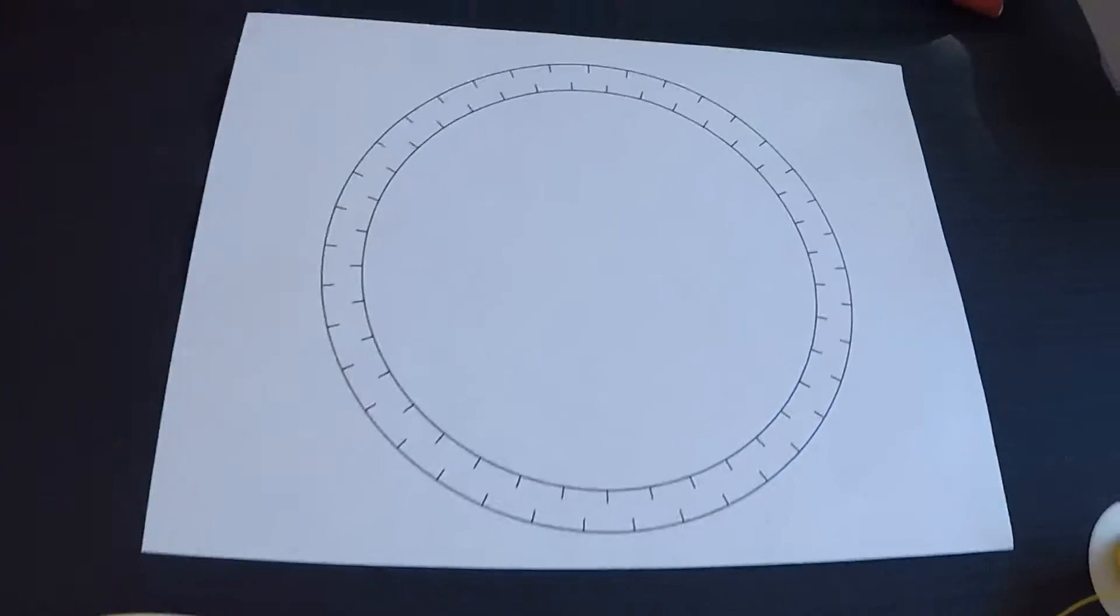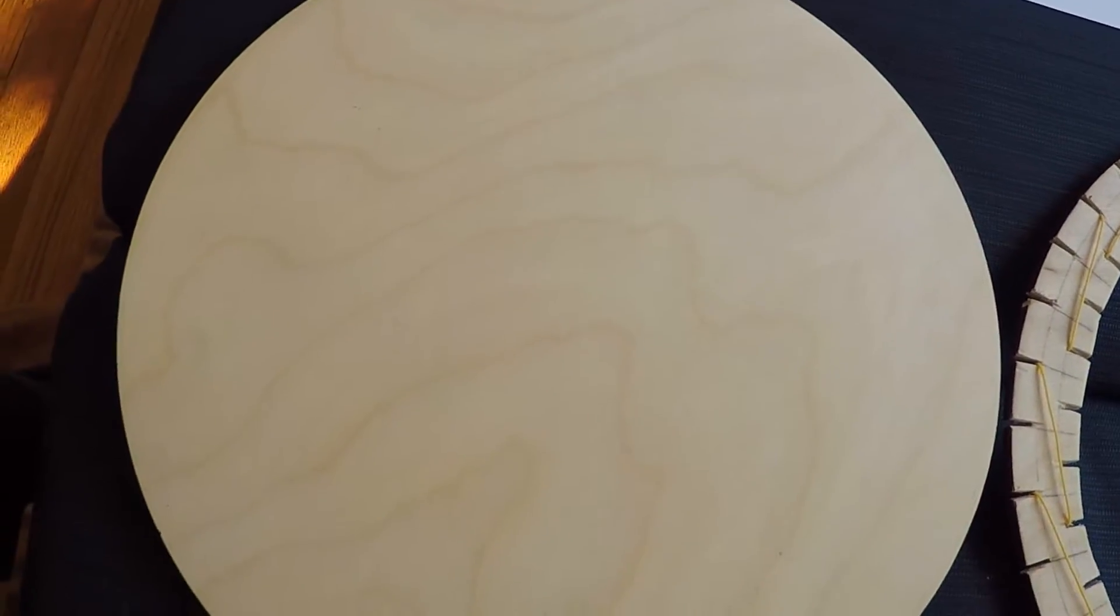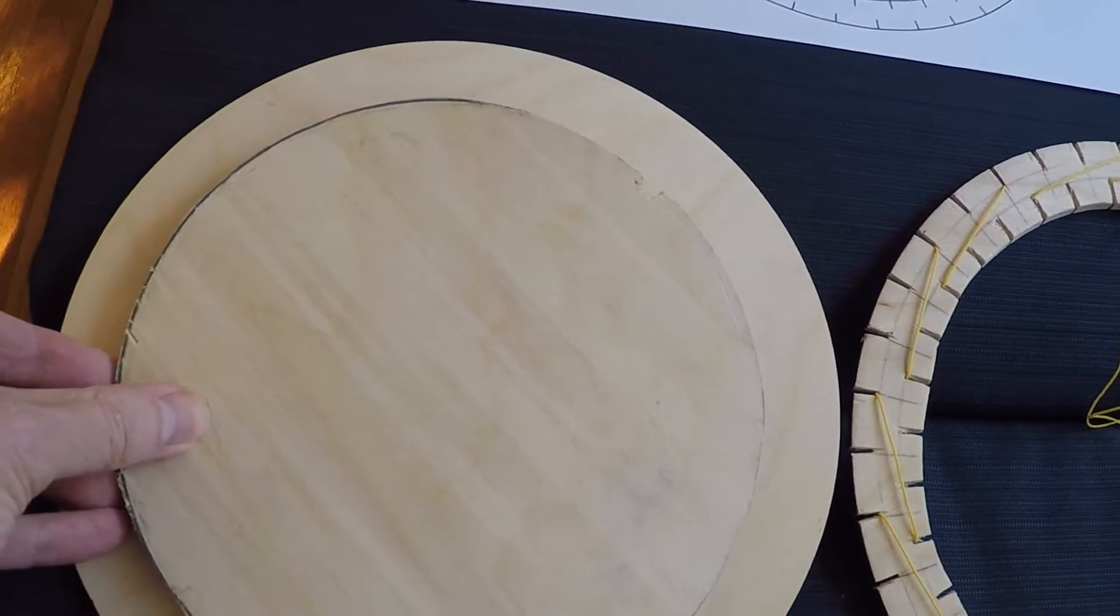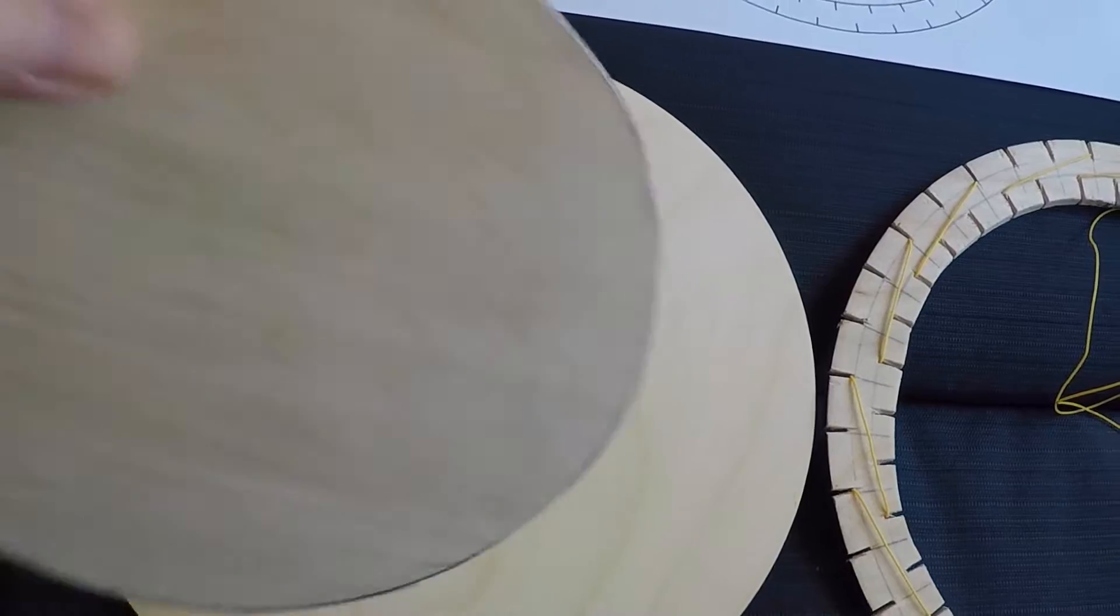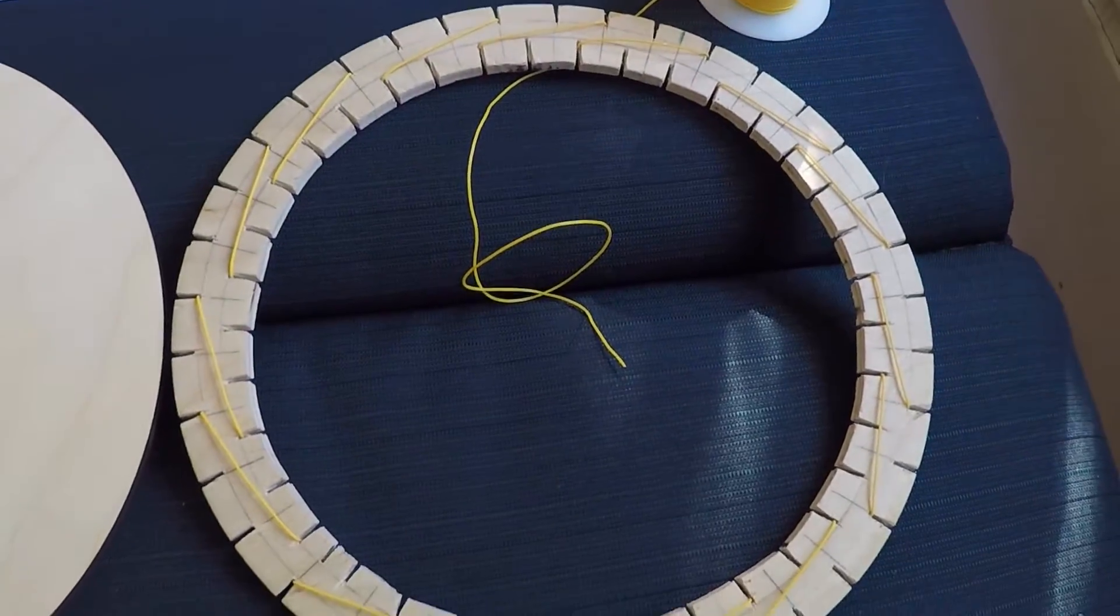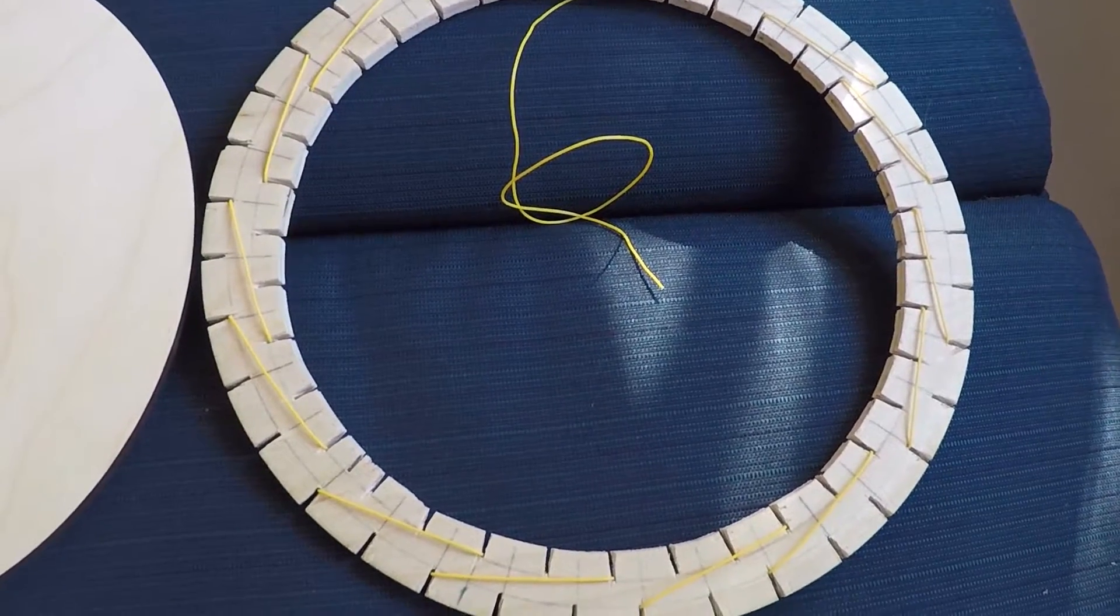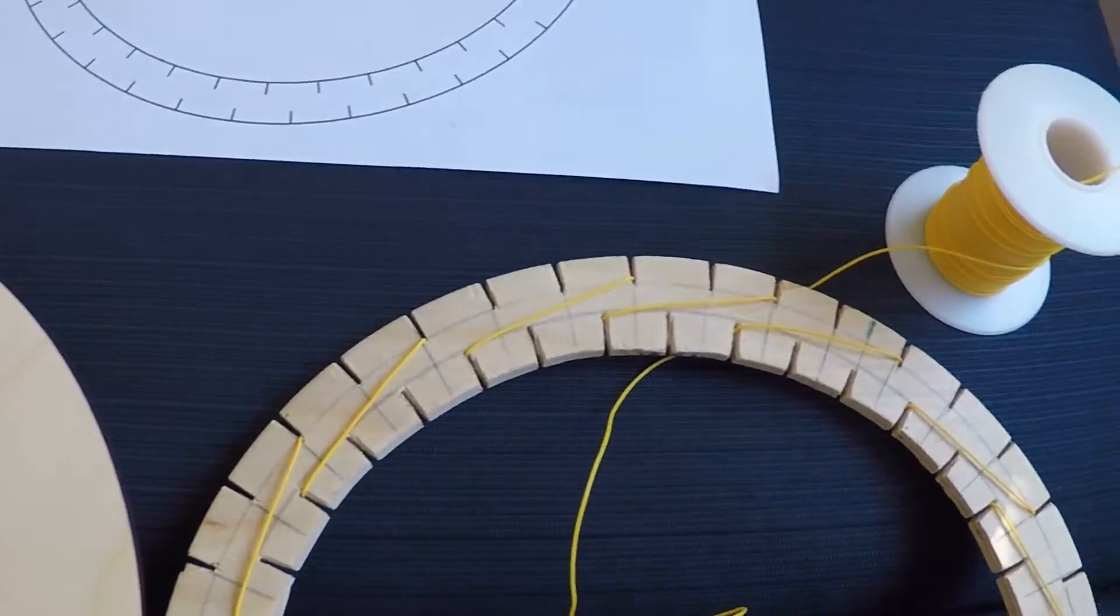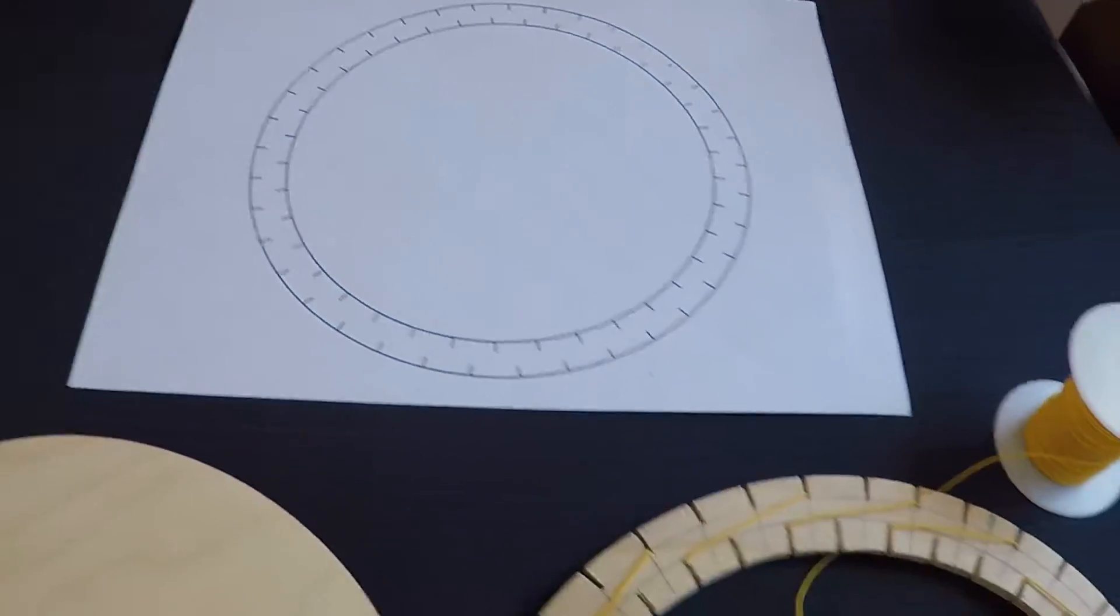So I extrapolated out the template since it's smaller, and here's the disc that I cut out of my form. Here's the finished frame, if you will, and the notches around it match that of the paper template.